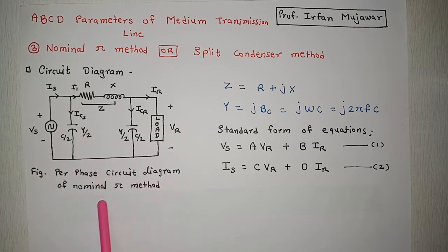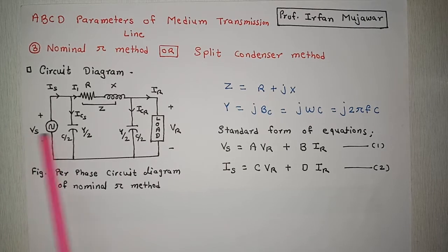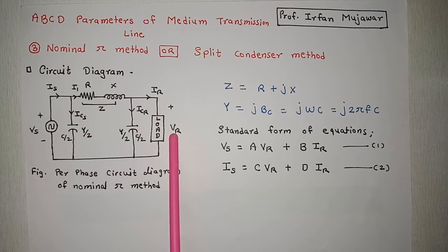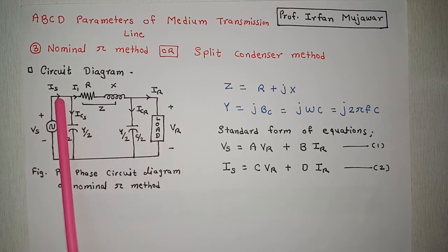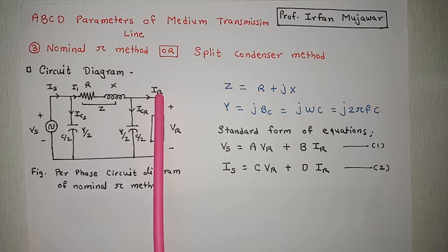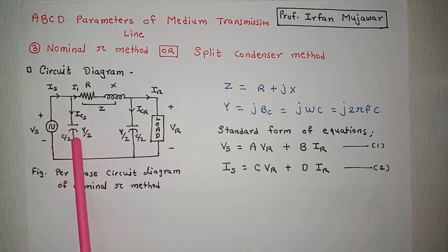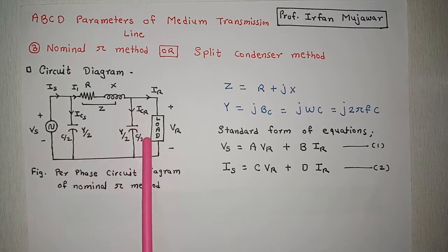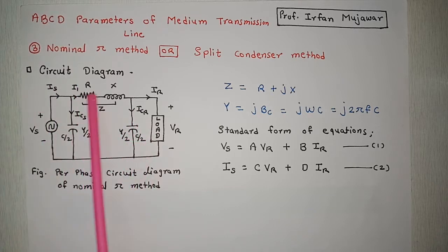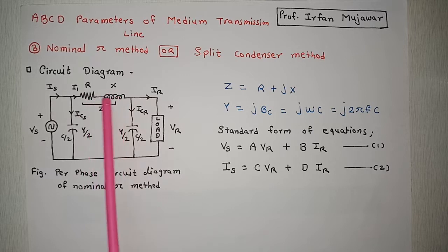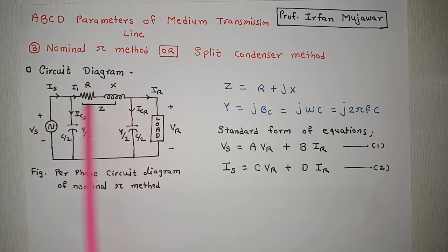This is the per-phase circuit diagram of the nominal pi method. As you can see here, Vs is the per-phase sending end voltage, Vr is the per-phase receiving end voltage, Is is the per-phase sending end current, Ir is the per-phase receiving end current, Ics is the per-phase capacitance current that will flow through C/2, and Icr is the capacitor current that will flow through the C/2 situated at the receiving end. R and X are the resistance and reactance of each conductor — per-phase resistance and inductive reactance.